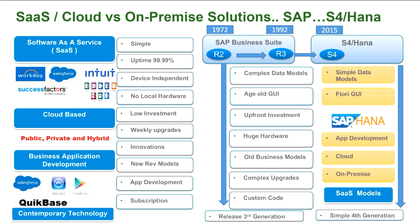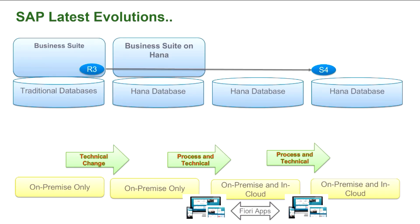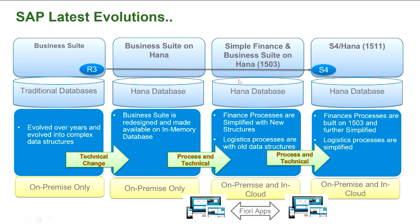SAP HANA has become both a database and an in-memory technology platform to support application development and offer their business suite in the cloud as well as on-premise. This is how SAP evolved over a period of time to S4 HANA. The transition from R3 to S4 went through stages: the business suite first moved onto the HANA database, then they simplified the business models with Simple Finance. We currently stand at S4 HANA support pack 1511, which may be changing as we speak.